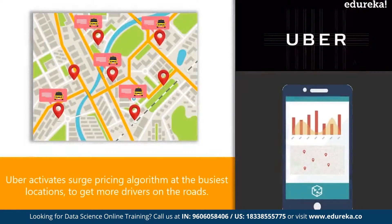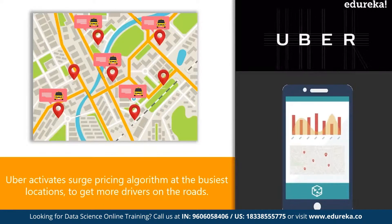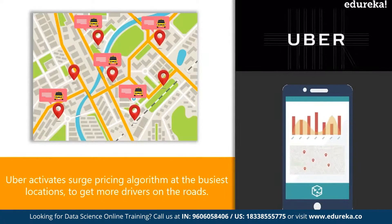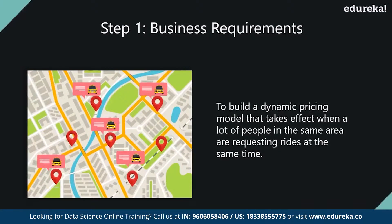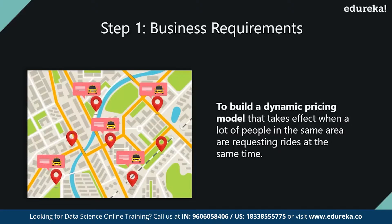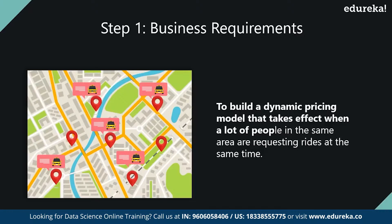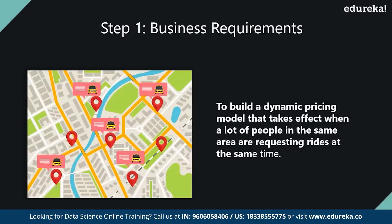Uber implements data science to find out which neighborhoods will be the busiest so that it can activate surge pricing to get more drivers on the road. In this manner, Uber maximizes the number of rides it can provide. Let's see how a data science process works. It always begins with understanding the business requirement or the problem you're trying to solve. In this case, the business requirement is to build a dynamic pricing model that takes effect when a lot of people in the same area are requesting rides at the same time.